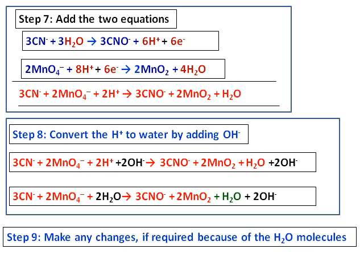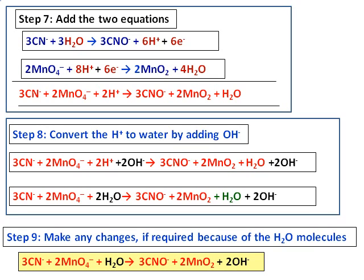Therefore, step 9, take away 1 molecule of water from the reactant side and then the final equation that results is shown there. And again do a final check to see that the atoms, oxygens, hydrogens and the charges are balanced.